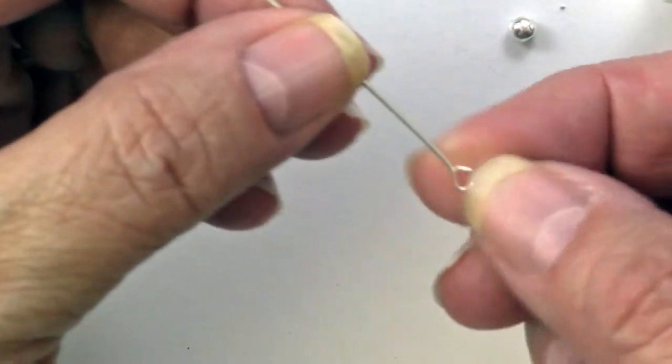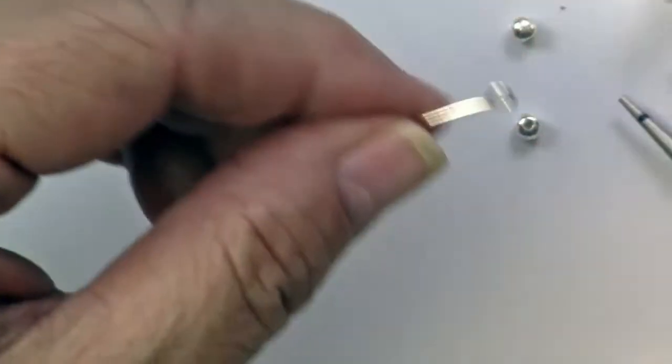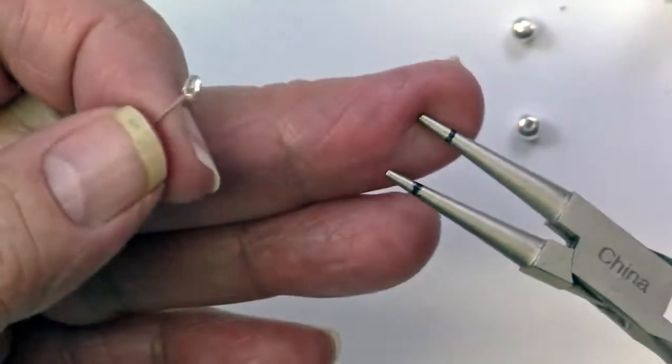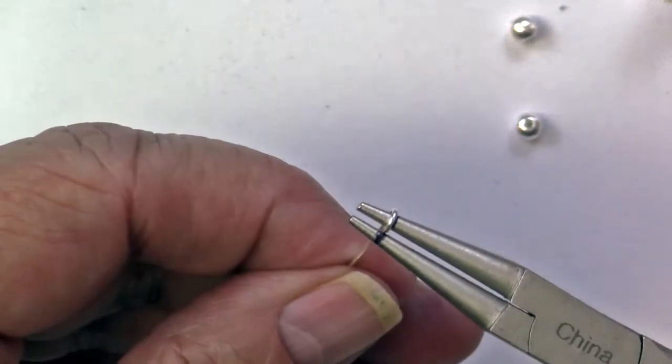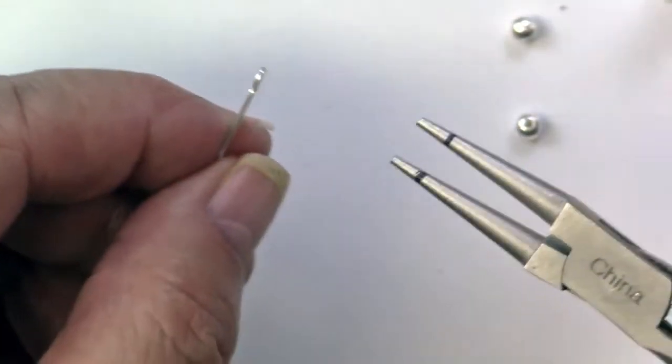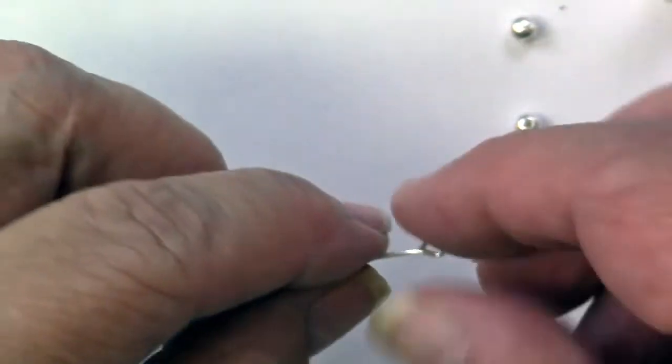What I'm showing you here is how I mark the pliers. These are round nose pliers and I'm just measuring them with the eye pins that I'll be using and make a little mark with my Sharpie and it's much easier to do that so that you get consistent loops.